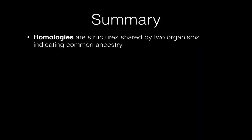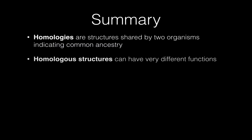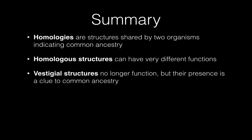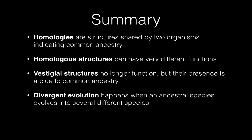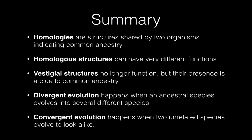So altogether, homologies are structures that are shared by two organisms that indicate or verify a common ancestry. Homologous structures can have very different functions, like we saw on the forelimbs. Vestigial structures are a type of homology where the structure no longer has a function today, but the fact that it's there is evidence of common ancestry to other organisms that still have that body part and it still has a function. Divergent evolution happens when ancestral species evolve into different species that look different from each other, and convergent evolution is what happens when two unrelated species, because of natural selection and adaptation to a similar environment, evolved to look more alike. Okay, so I hope that helped, and we will stop there.